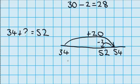So I record what I did. I did my big tidy number jump up of 20. Then I had to jump back a little bit. Jump back 2, which means in total, I jumped up 18. So 34 plus 18 equals 52.